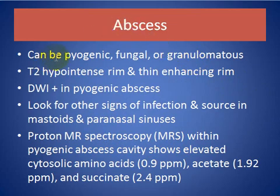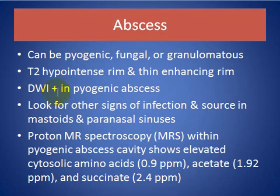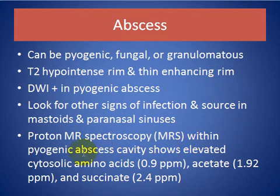Abscess: can be pyogenic, fungal, or granulomatous. Shows T2-hypointense rim and thin enhancing rim. Diffusion is positive in pyogenic abscess. Look for other signs of infection and source, such as mastoid or paranasal sinuses. Proton MRI spectroscopy within the pyogenic abscess cavity shows elevated cytosolic amino acids.